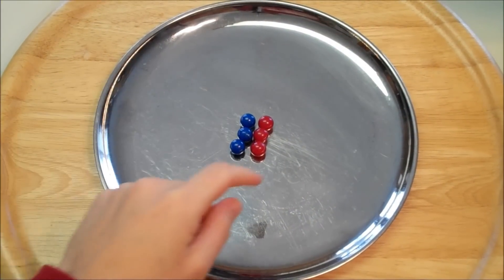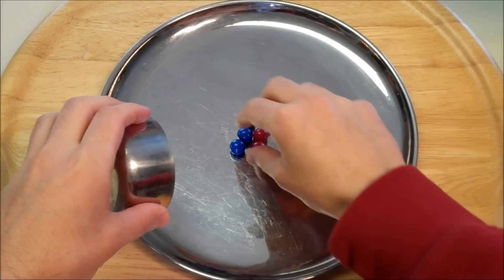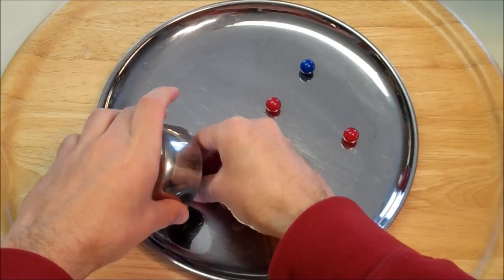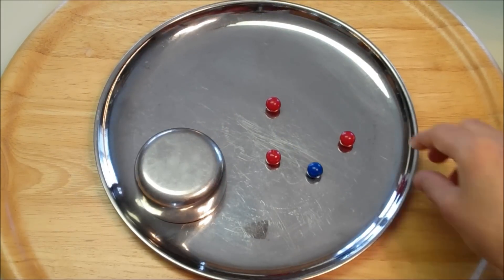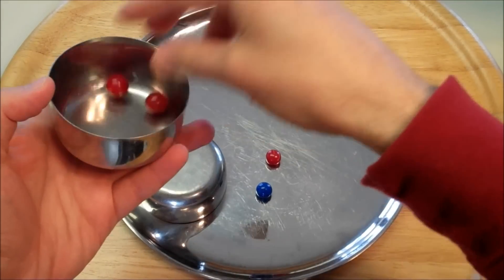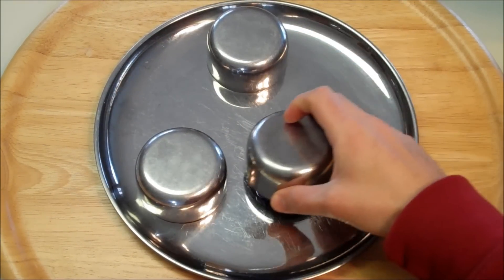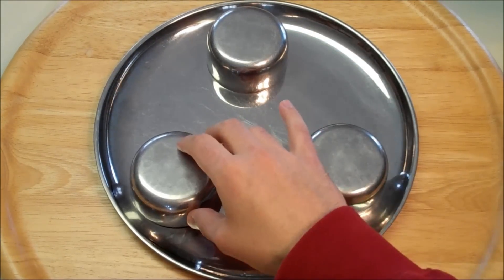We started out with three blue marbles and three red marbles, which we placed under bowls. Under one of the bowls, I placed two blue marbles. Under another bowl, I placed two red marbles. And under the final bowl, I placed the remaining one red and one blue marble.